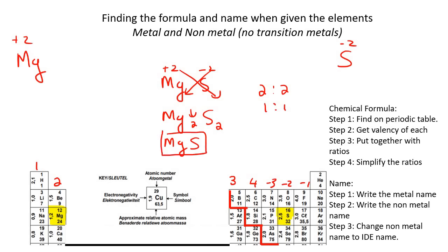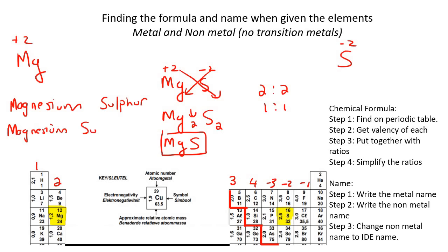Notice that MgS is written as one unit together, not separate. To work out the name: the metal is magnesium, the non-metal is sulfur — some people spell it 'sulphur'. Change it to the IDE name, so it becomes magnesium sulfide. Note: sulfate and sulfite are something totally different — that involves SO₄ and SO₃, which we're not covering in this lesson.